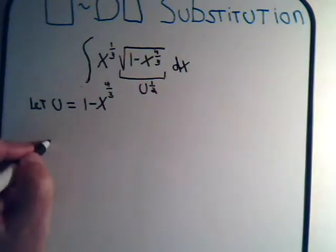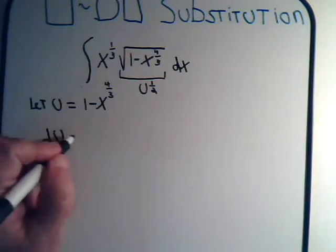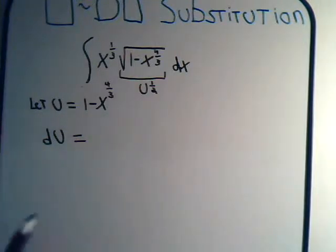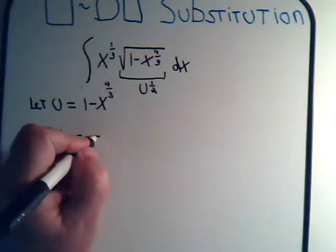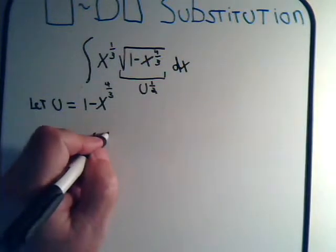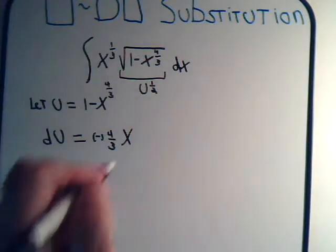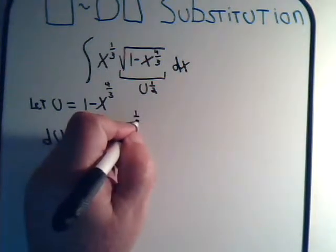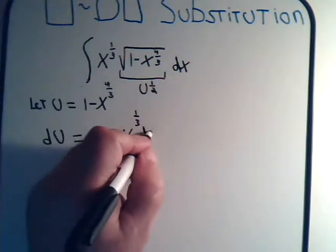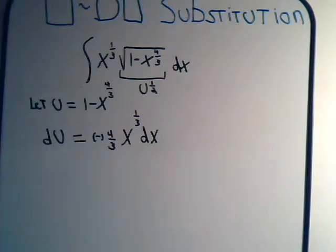And I have du will equal, bring this down, and that would be minus 4/3 times x to the 1/3 dx.